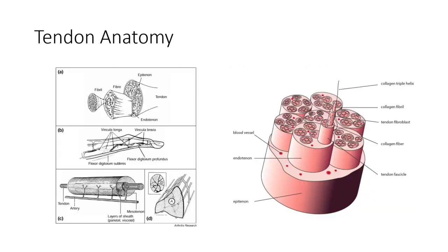Tendons are not avascular — they do have a blood supply. They are hypovascular, but not avascular. The vascular supply to the tendon arises in three distinct areas: the musculotendinous junction, the osteotendinous junction, and vessels from surrounding connective tissues like the peritendon, mesotendon, and vincula. The vessels are arranged longitudinally along with the tendon.